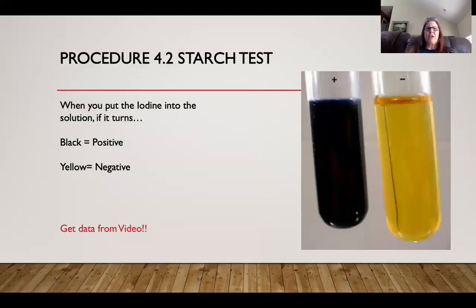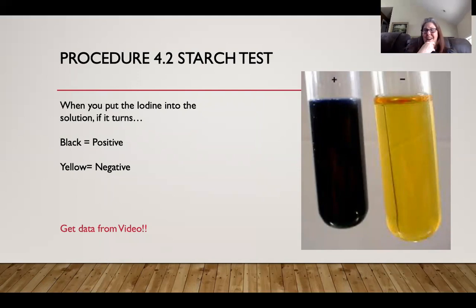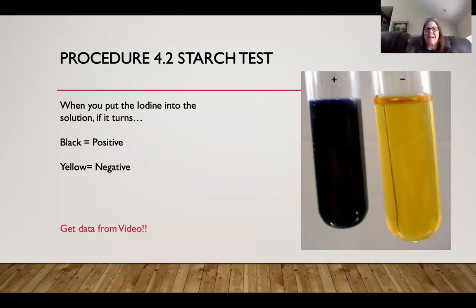The next procedure is the starch test. When starch is mixed with iodine, it turns black — very simple. You add drops of iodine, swirl it around, and it's either black (positive) or yellow (negative). Get your results from the video.